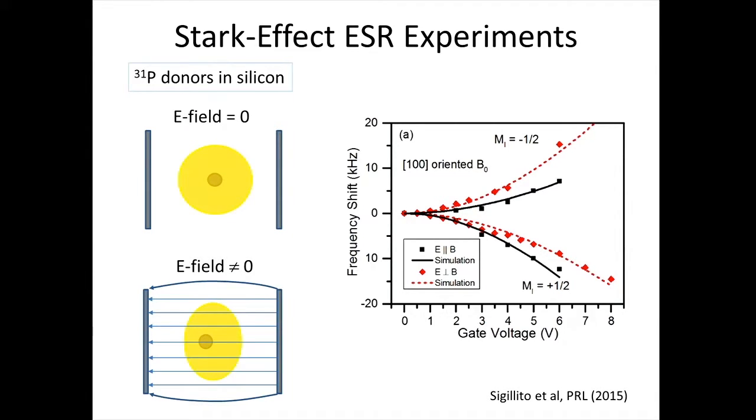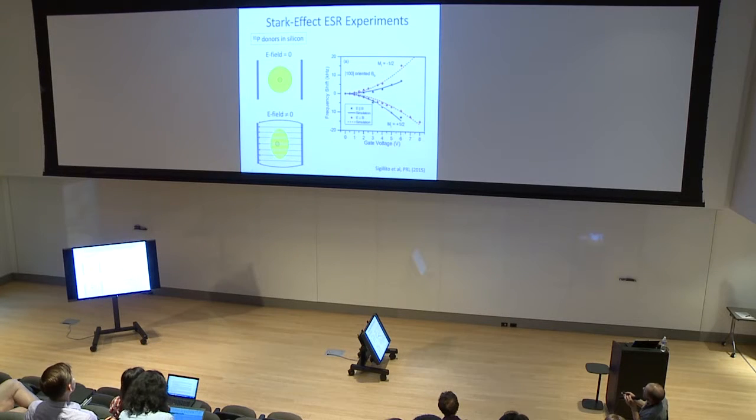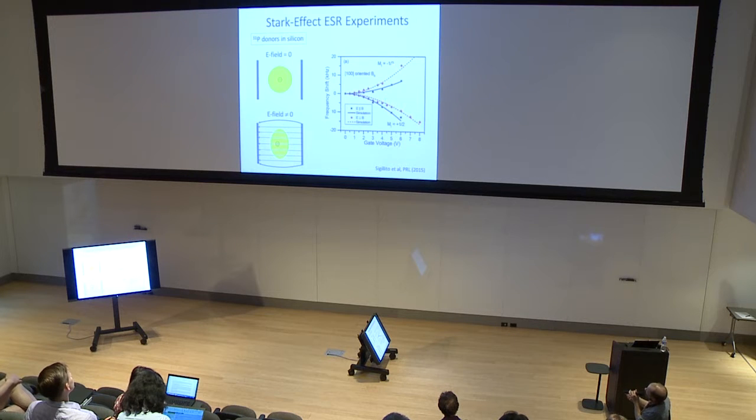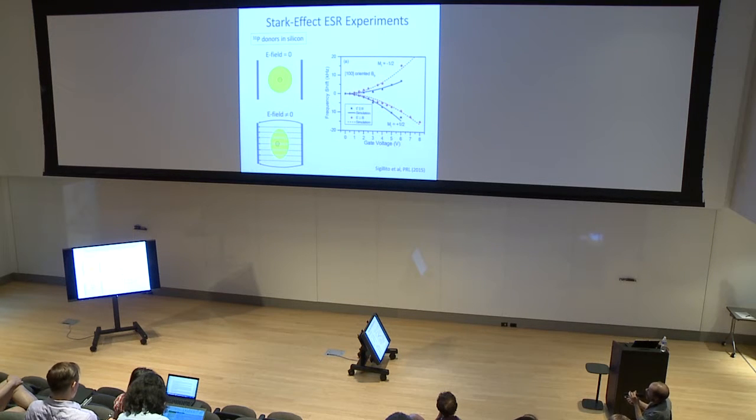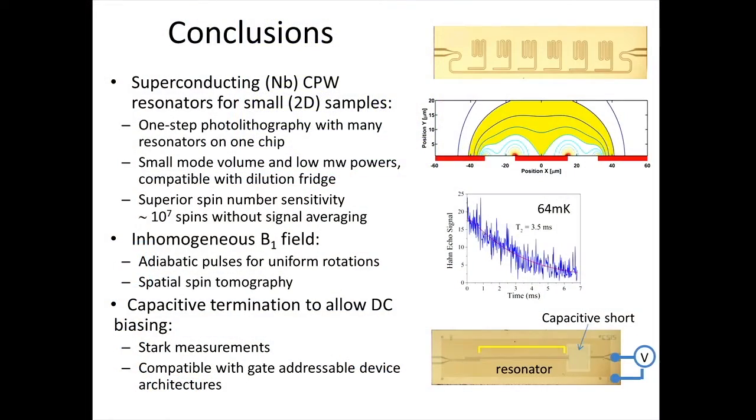We've used this resonator to do a Stark effect measurement of donors in silicon. With the electron field not applying, electron wave function is symmetric and we have one configuration of hyperfine coupling and coupling and electronic G factor. When field is applied, everything shifts. Electron wave functions shifts. Coupling constant change and this leads to change of the electron spin resonance frequencies. This is what we measured on as shown on this plot for two different hyperfine lines of the phosphorus donors and for two different relative orientations of electrical field and magnetic field.